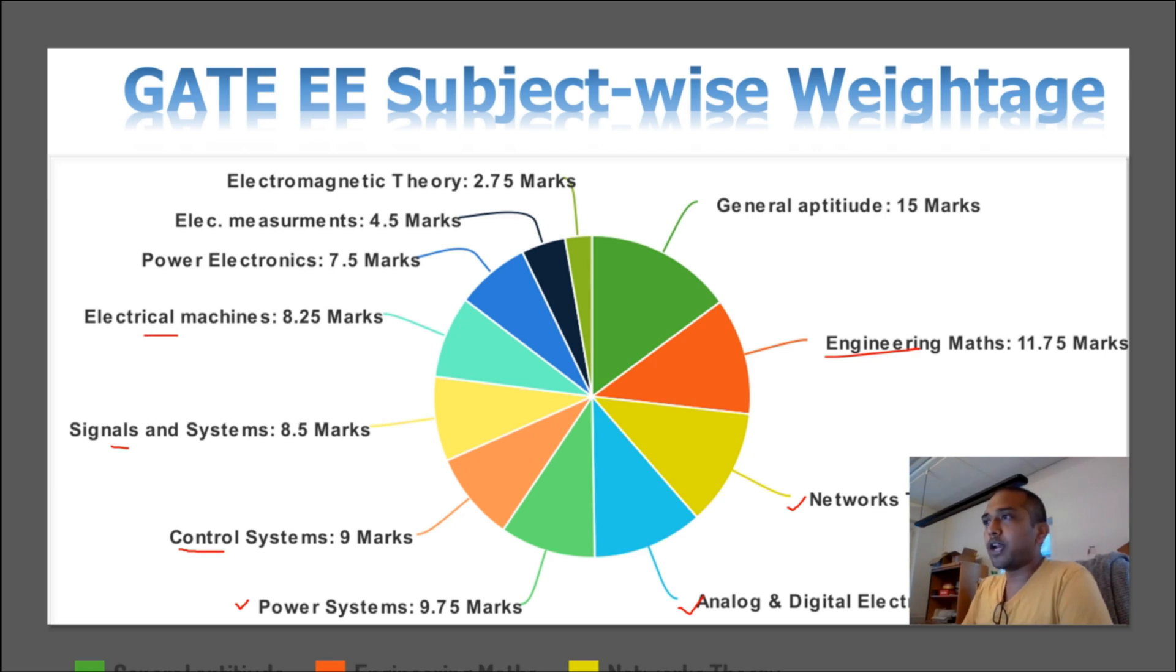And then you have electrical machines 8 marks, power electronics around 7.5 marks, electrical measurements 4 marks, and electromagnetic theory 3 marks.